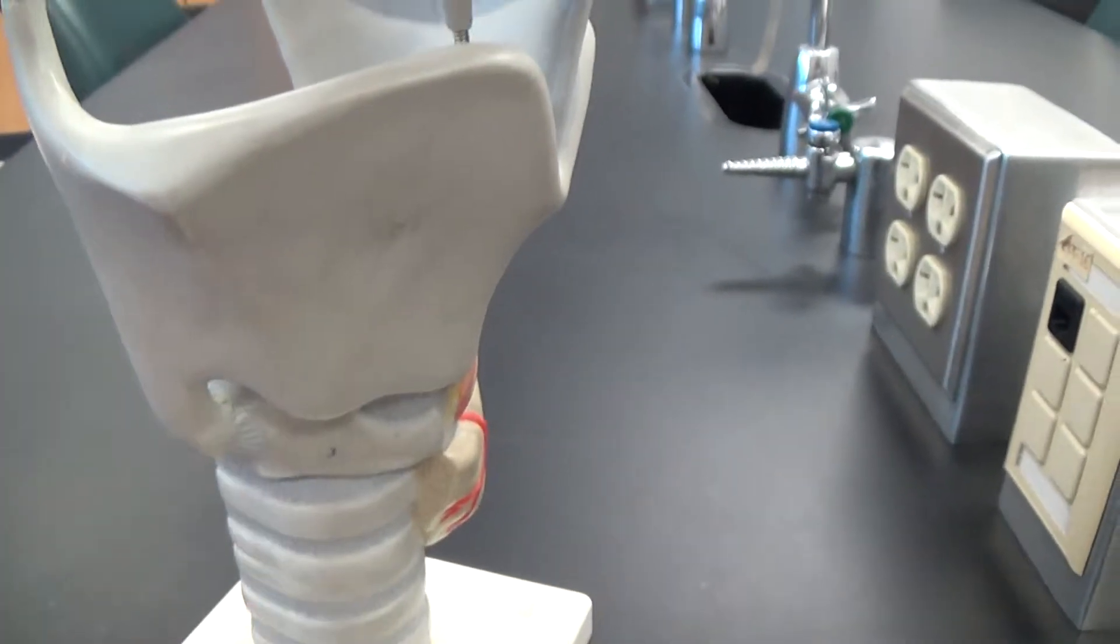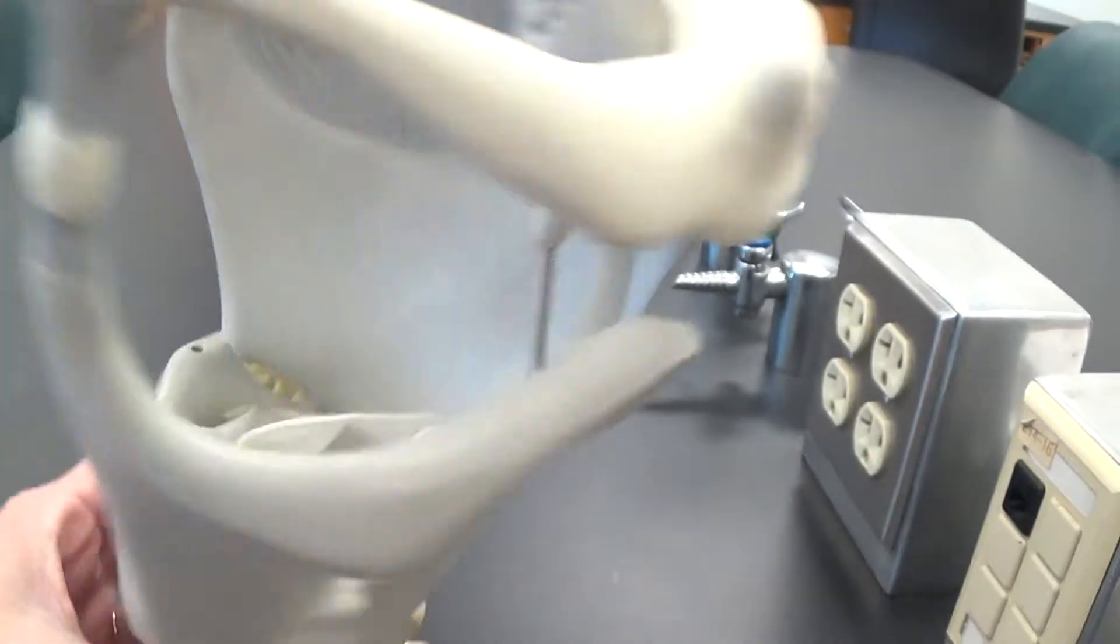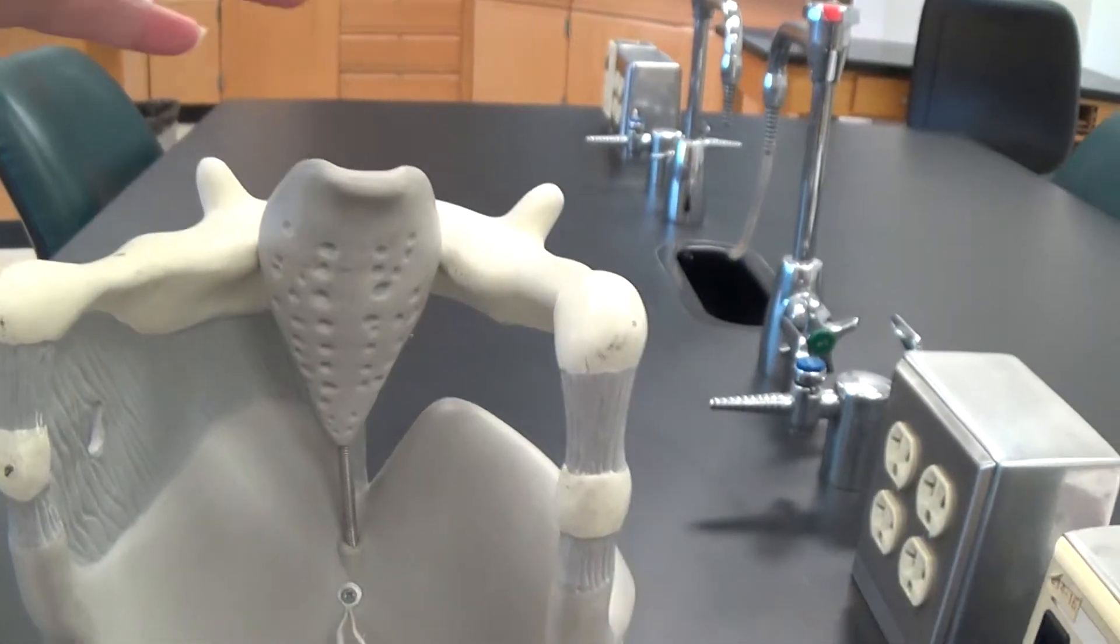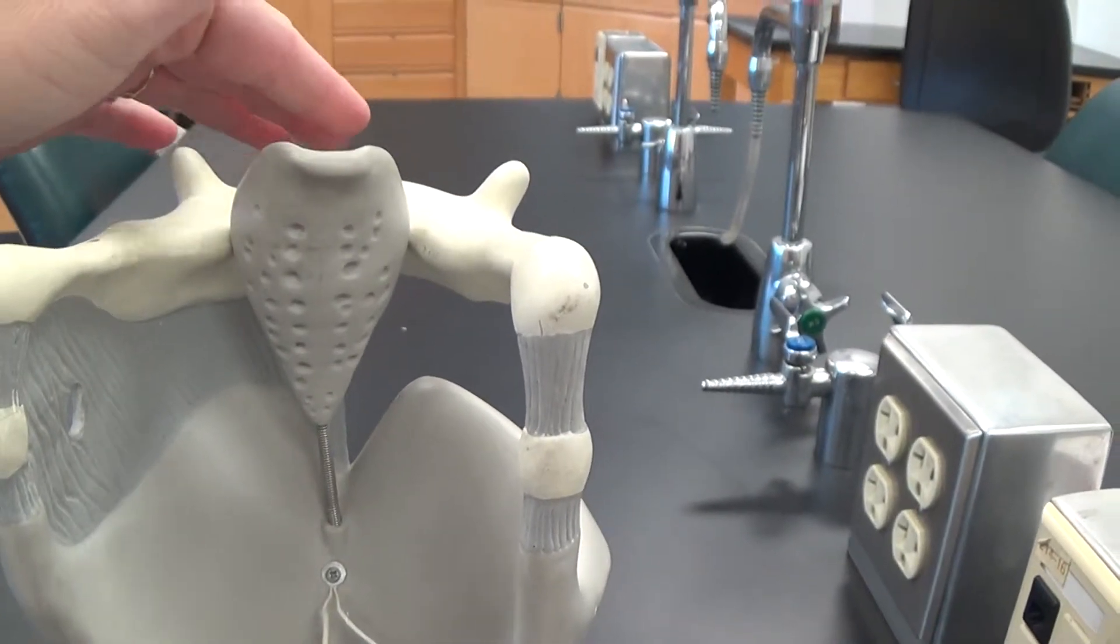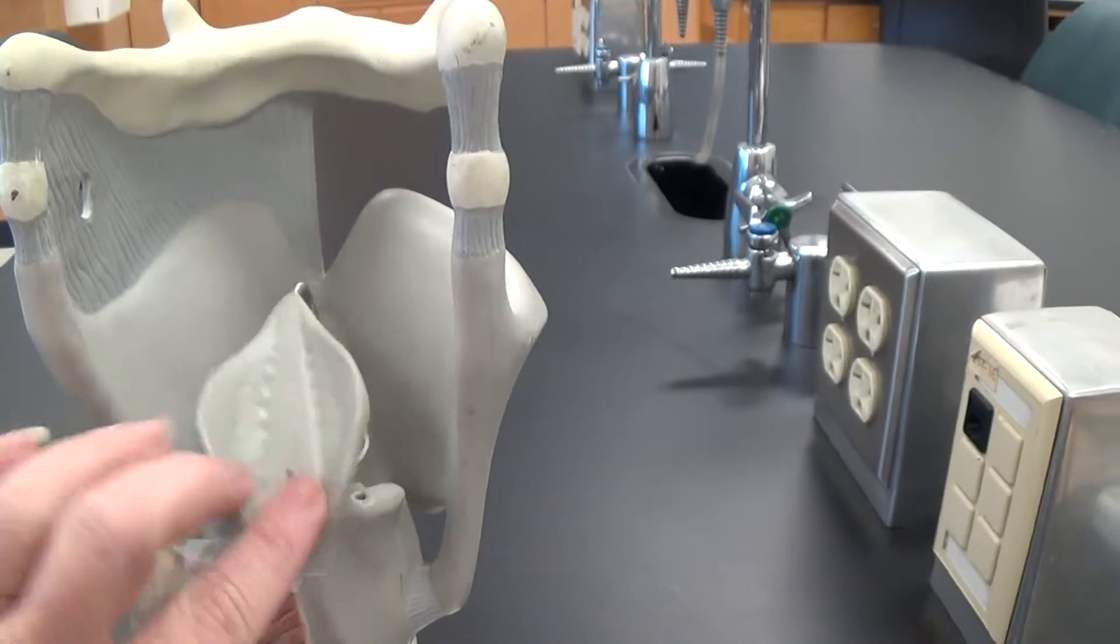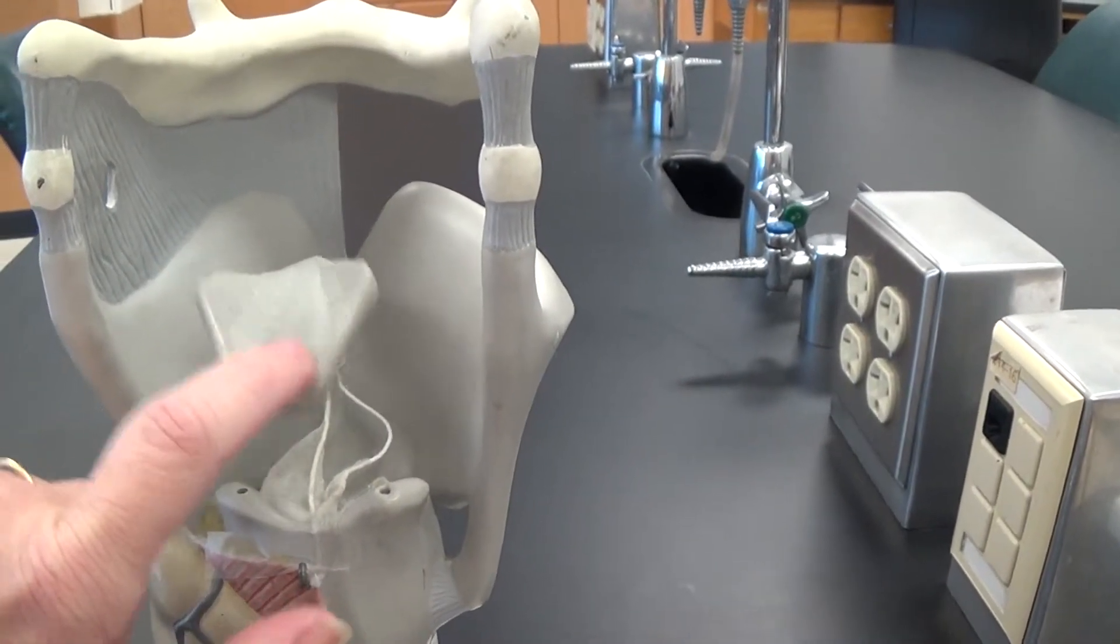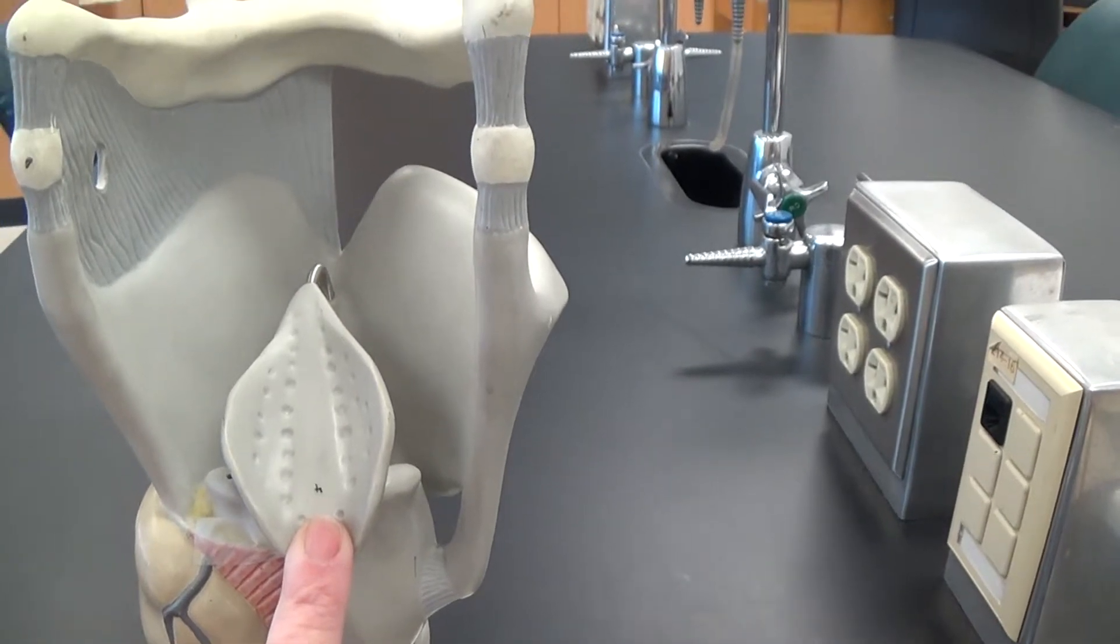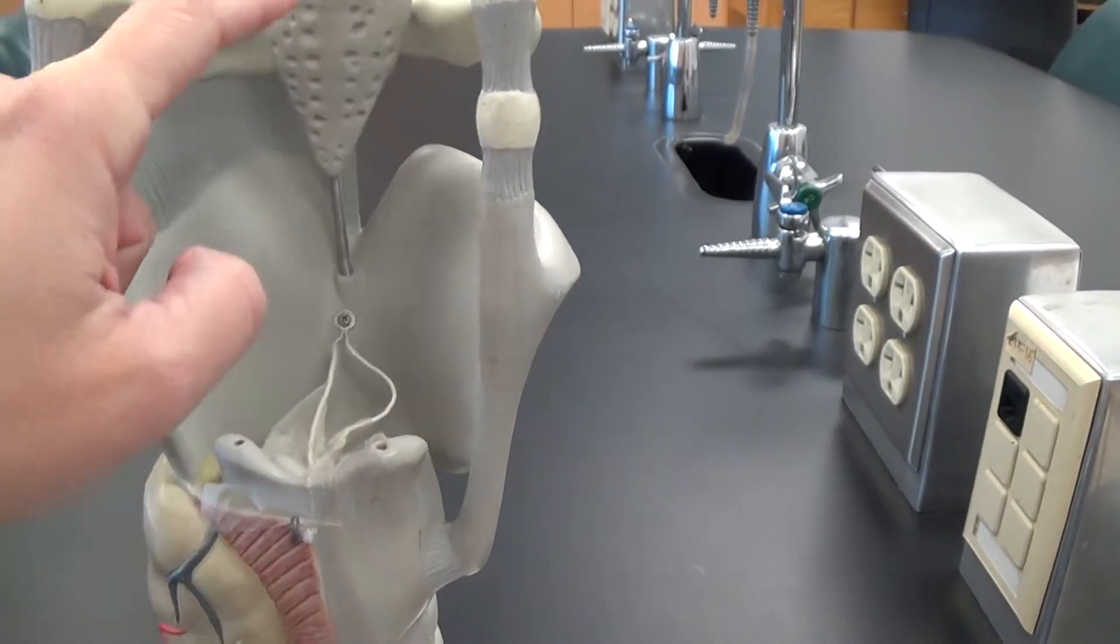So lots of cartilage to support the trachea remaining open. When you swallow food, that food comes down and closes this off. This funky structure here is the epiglottis, and as that gets pushed down, it closes off the opening to the trachea.